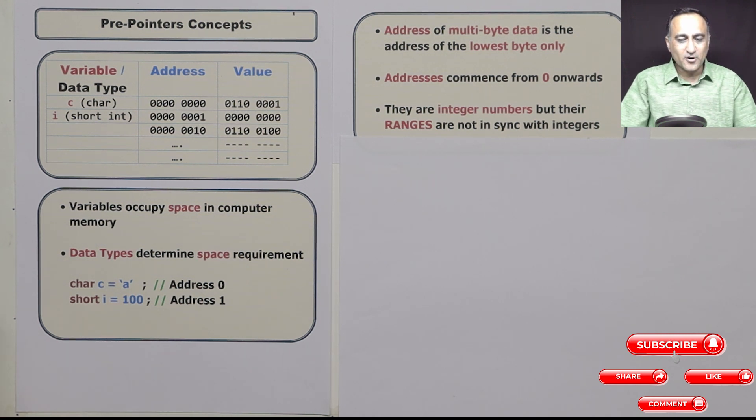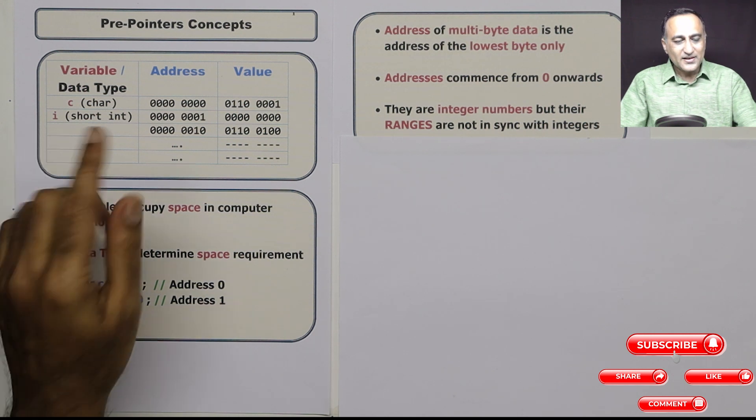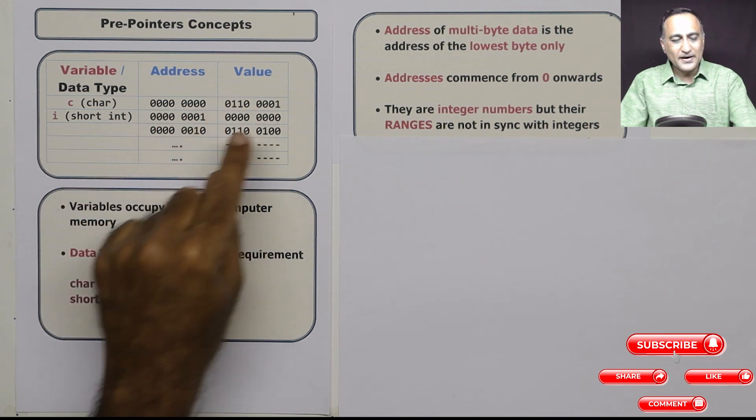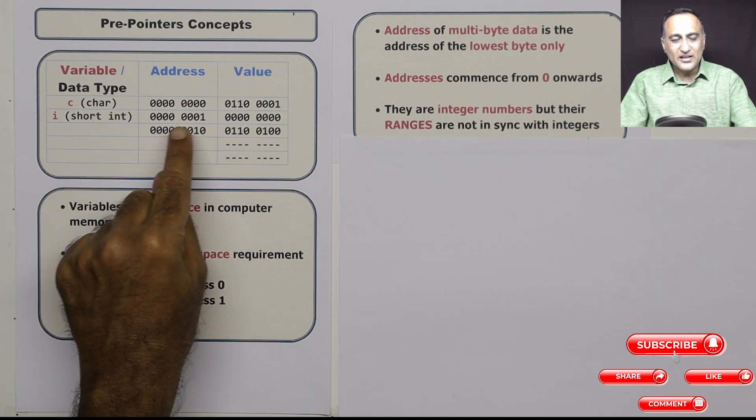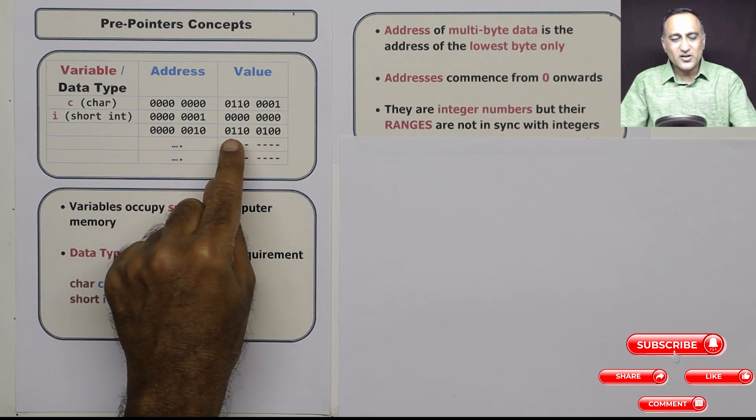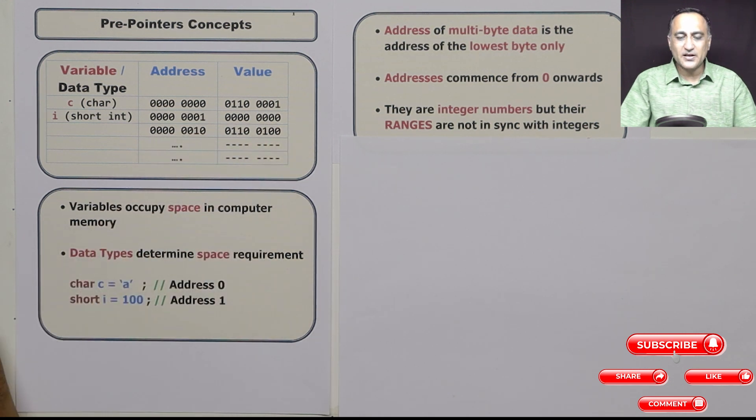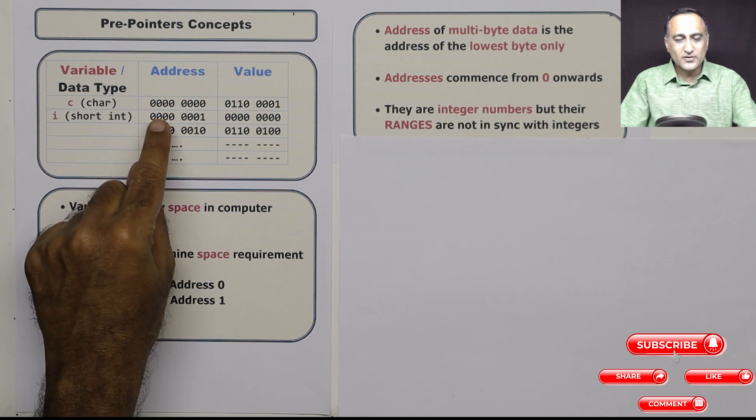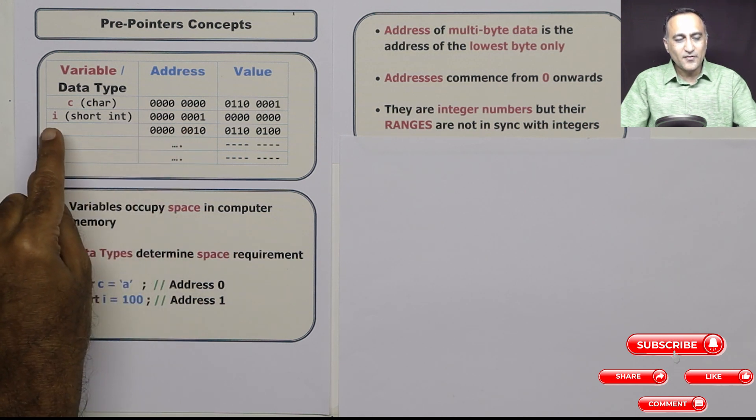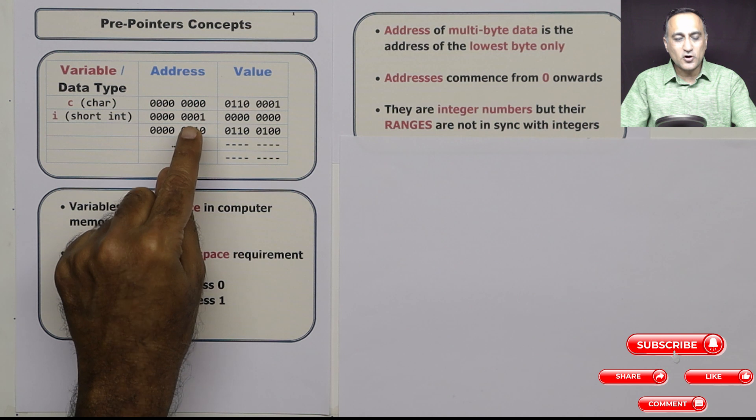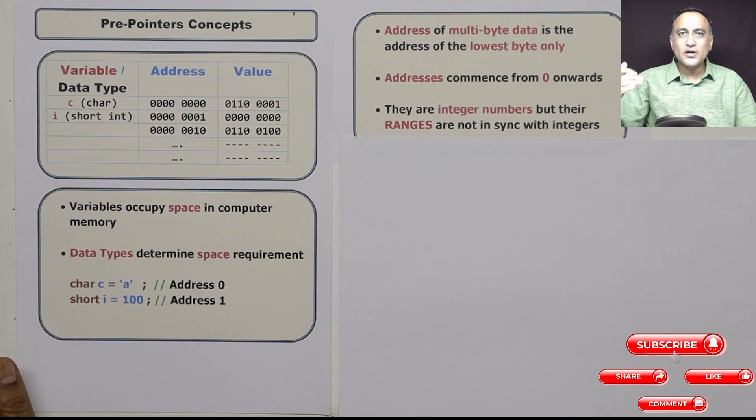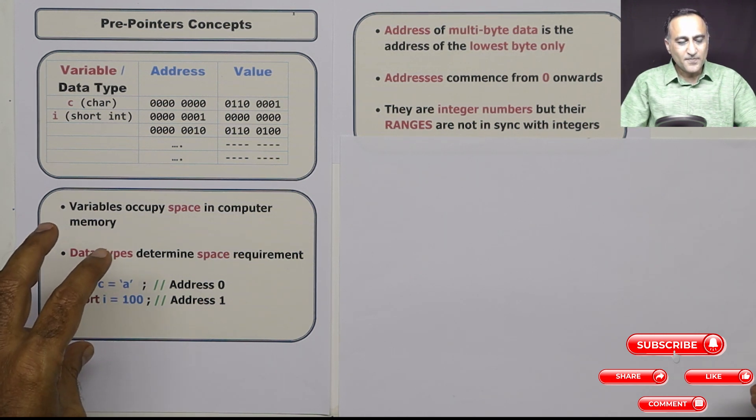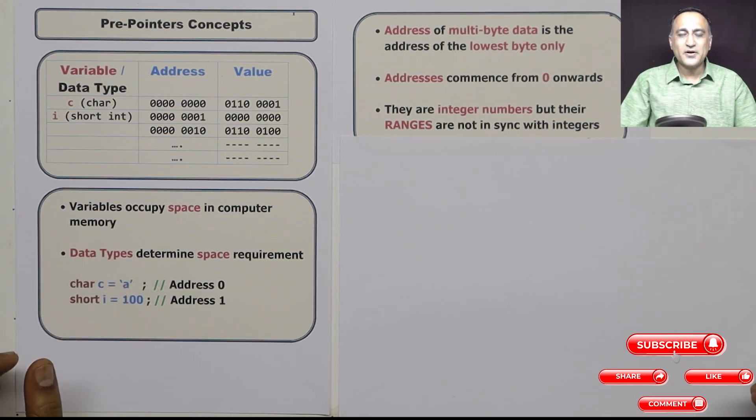So I hope this is clear now. Character is represented in a single address in one byte. Short int requires two bytes. But in the first location, it's all zeros, in the next location, the actual number 100 is represented. And the address is always the address of the first byte. So address of i is one, it's not one and two, it is just one. So I hope this brought you on speed with pre-pointer concepts, which is essential for understanding pointers, which we are going to start in the next lecture.